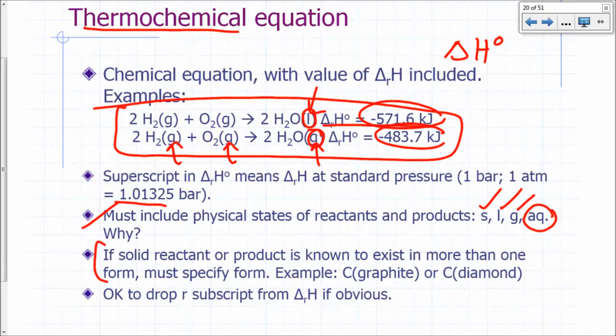If you have a solid reactant or product and that solid is known to exist in more than one form, you must specify the form. For example, carbon, solid carbon can be in the form of graphite or it can be in the form of diamond.